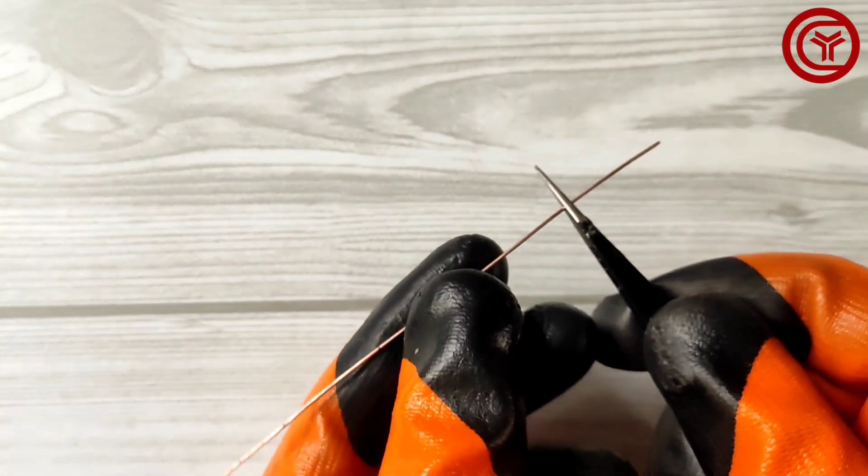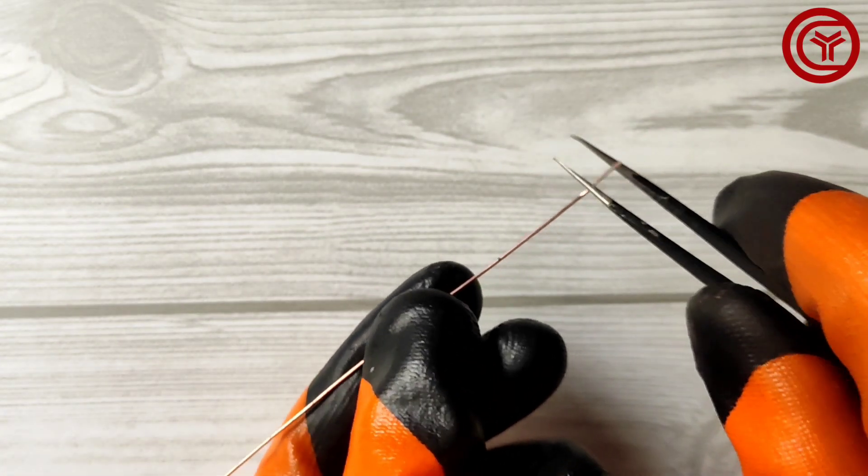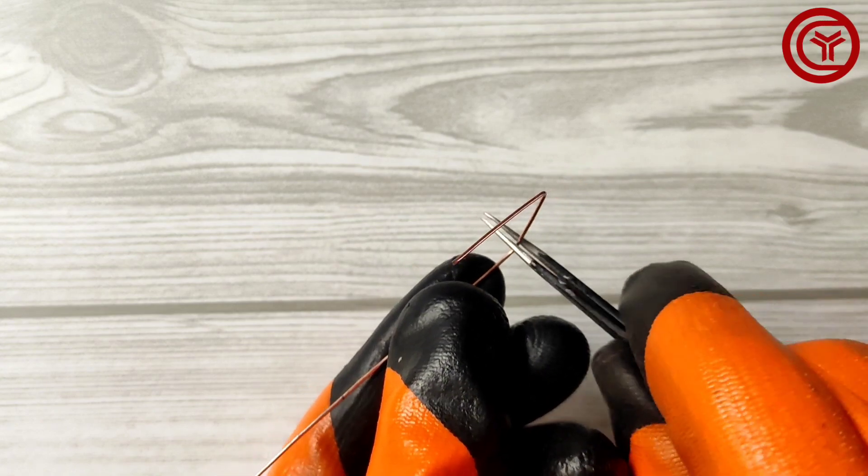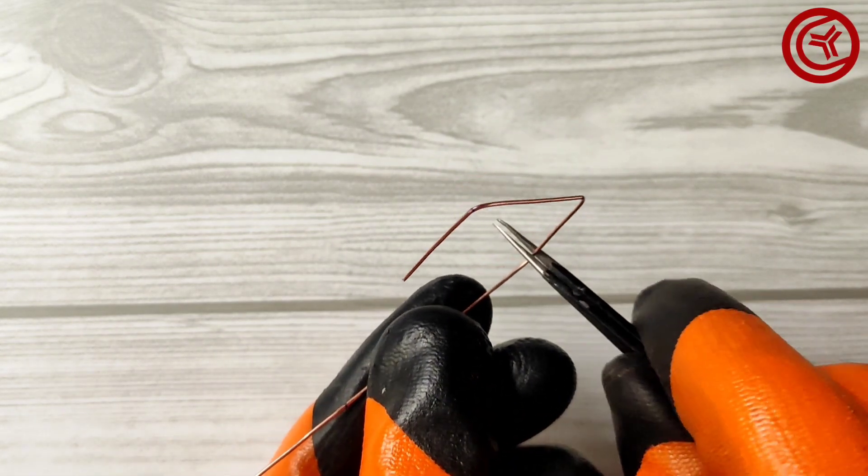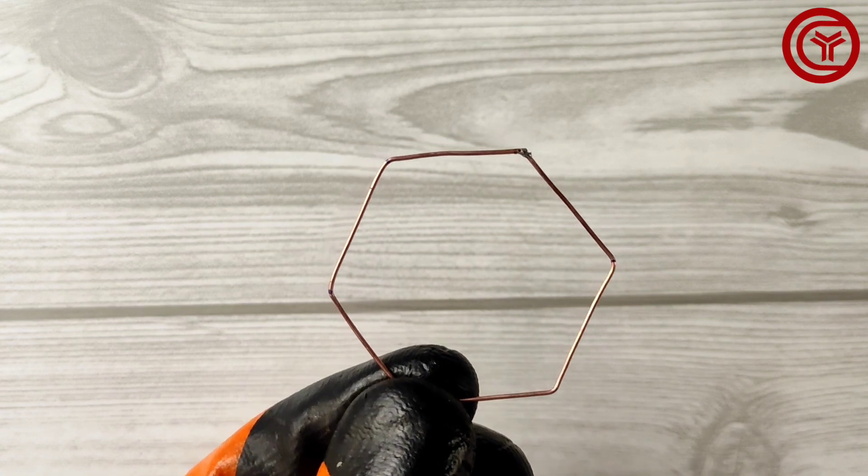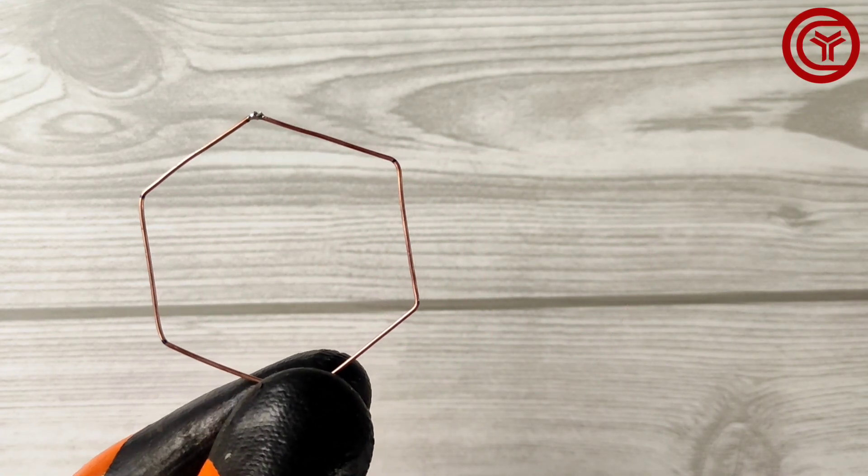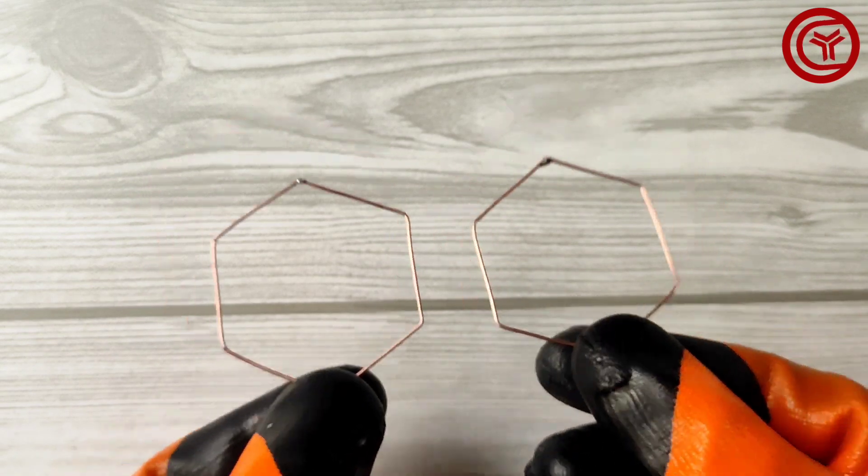Mark the copper wire and leave space of 1 inch between the marks. Now start bending the copper wire on marks. We made a pair from 2 marked wires.